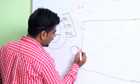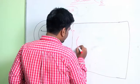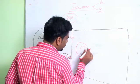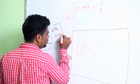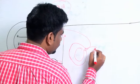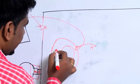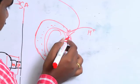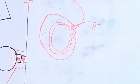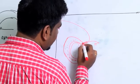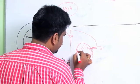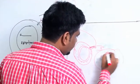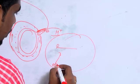Once hemagglutinin attaches to the sialic acid, the virus gets inside the host cell. To release its contents, the M2 ion channel comes into play — M2 leads to an influx of H+ ions inside the cell. This causes fusion of the viral membrane along with exposure of the HA2 domain. The rising pH due to influx of H+ ions allows the viral contents to be released into the nucleus.